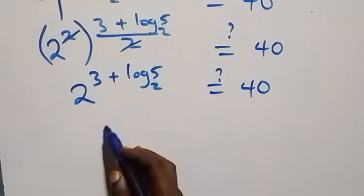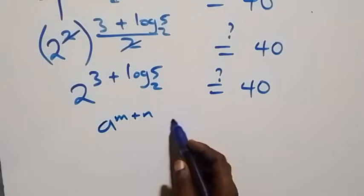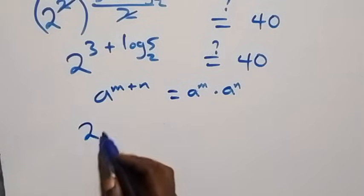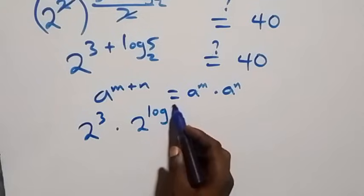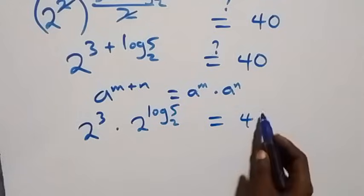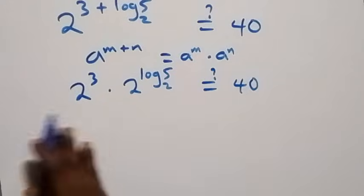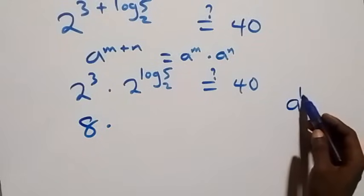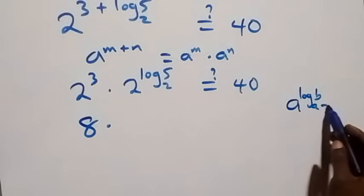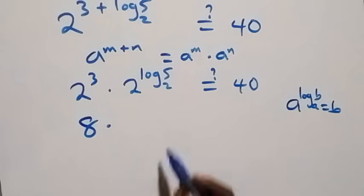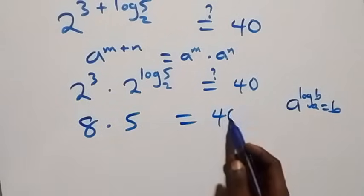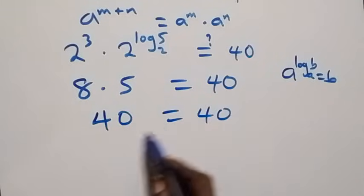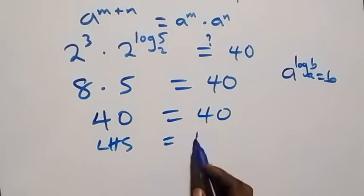This follows the law of indices: a raised to power m plus n is the same as a raised to power m times a raised to power n. So what we have becomes 2 raised to power 3 times 2 raised to power log base 2 of 5, equals to 40. Now 2 raised to power 3 is 8. And by the identity a raised to power log base a of b equals b, we have 2 raised to power log base 2 of 5 equals 5. So 8 times 5 equals 40, which is indeed equal to 40.